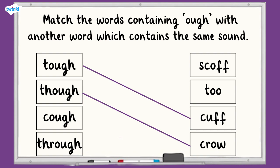The word cough has the same sound as scoff. They make the short UH sound with F. The word through has the same sound as two. They make the OOO sound. Great job if you matched those correctly.